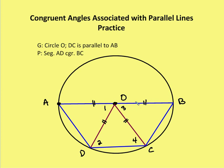I also know that I have two parallel lines that are given: AB and DC. I know that alternate interior angles between two parallel lines cut by a transversal are going to be congruent. So I can say that angle one is congruent to angle two. Let me mark that in the diagram in blue.